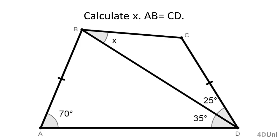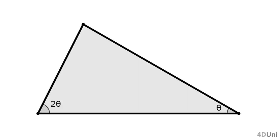Going back to our problem: if we try to use the additional basic properties, we don't find any isosceles triangle nor the possibility to form an equilateral triangle. We should realize that in triangle ABD the ratio of the measures of two internal angles is 1 to 2, because one is 35 degrees and another is 70 degrees. So we have a triangle like the one shown in the figure, labeling the measures of two internal angles theta and two times theta to consider the ratio 1 to 2.